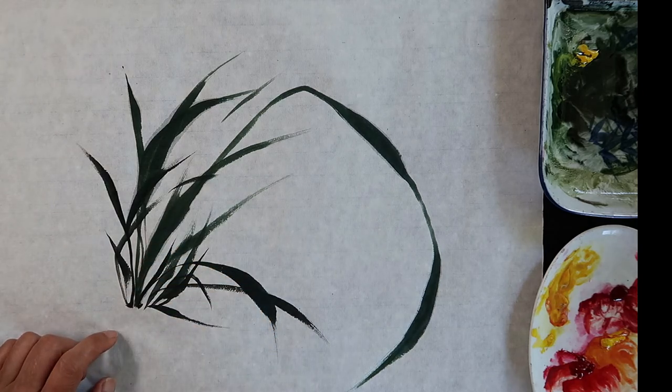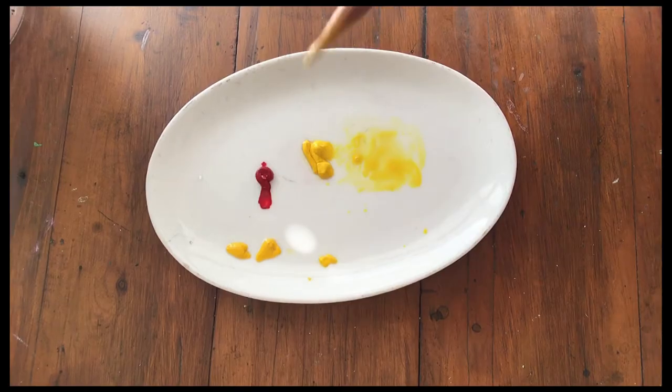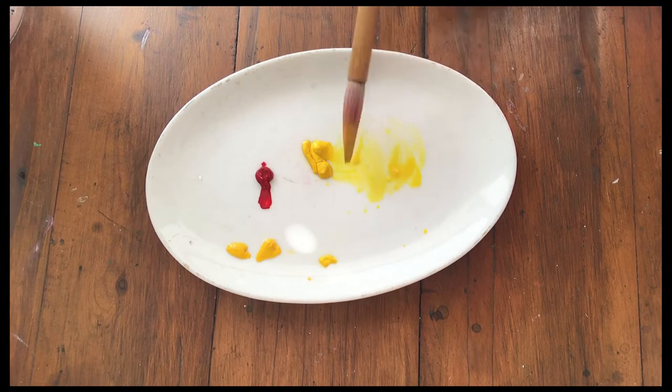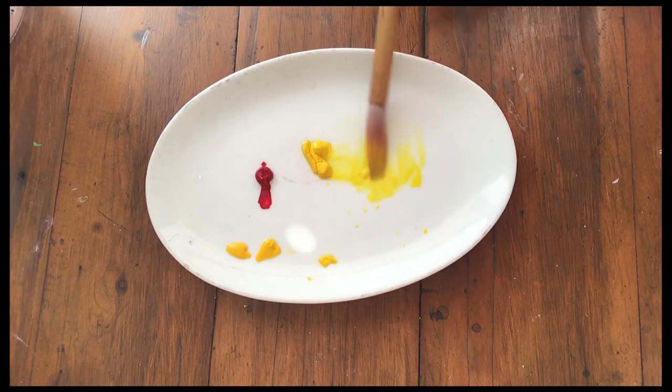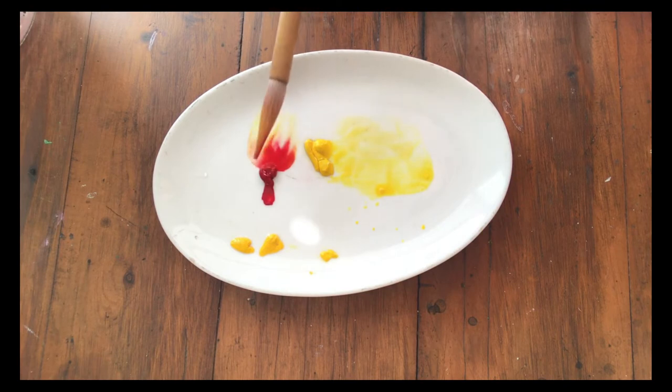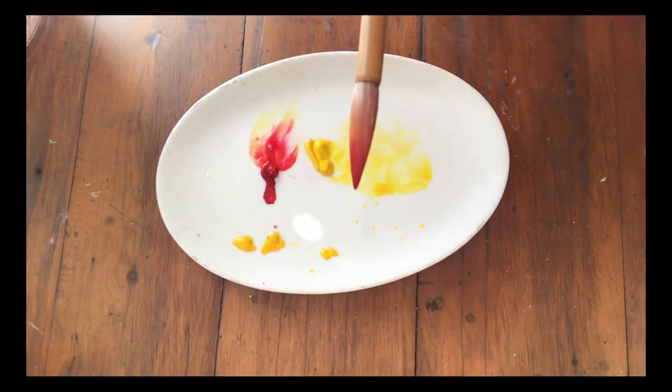For the petals, I mixed orange color with yellow and carmine. And at the tip of the brush, I add a little bit more carmine.